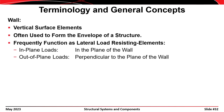In contrast to beams and columns, which are one-dimensional elements, a wall is a two-dimensional surface element arranged vertically. Walls are often used around the perimeter or exterior of the structure to form the envelope or facade. Walls can carry loads in the plane of the wall or loads applied out of the plane — perpendicular to the plane — of the wall.